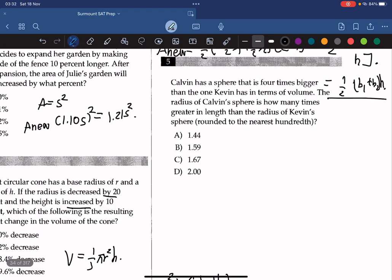Alright, Calvin has a sphere that is 4 times bigger than the one Kevin has in terms of volume. The radius of Calvin's sphere is how many times greater in length than the radius of Kevin's sphere?